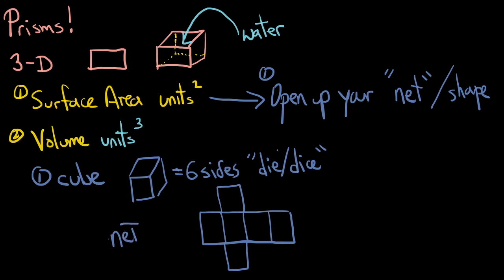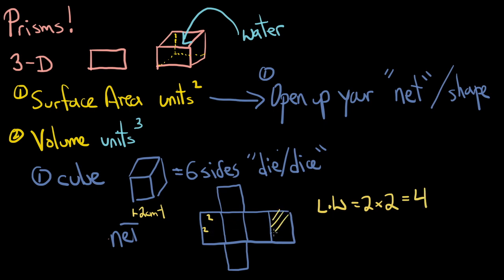If you're given a piece of information — let's say you were told that this was two centimeters — so everything is two by two. If you had to figure out the surface area, all you would be doing is multiplying length times width. So that would be two times two, which is four — that's the area of one face. There are six of them, so the surface area would be 24 centimeters squared. You're always going to be breaking things down when you're doing the surface area.